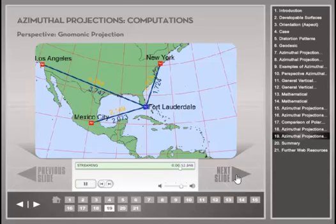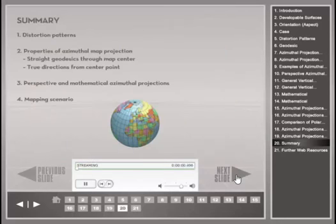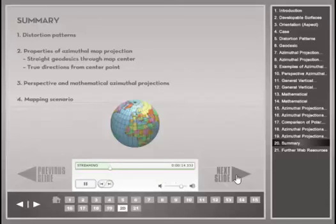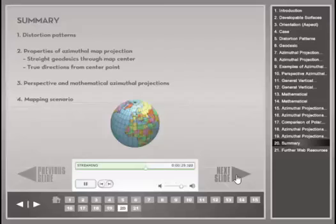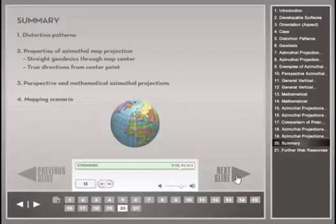This large distortion serves as a reminder to avoid the gnomonic azimuthal map projection for measuring distance. True distances from Fort Lauderdale to Mexico City and New York were distorted with the gnomonic projection by 70 kilometers and 50 kilometers respectively. Clearly, the distortion grows rapidly over longer distances. This presentation started with an introduction to distortion patterns of azimuthal map projections, showing distortions are smallest near the point of tangency and the line of intersection. It then covered two distinct properties of azimuthal projections, followed by several examples of perspective and mathematical azimuthal projections. A final scenario demonstrated how map projections can result in extreme distance distortions, stressing the importance of being careful when choosing a map projection for a given project task.